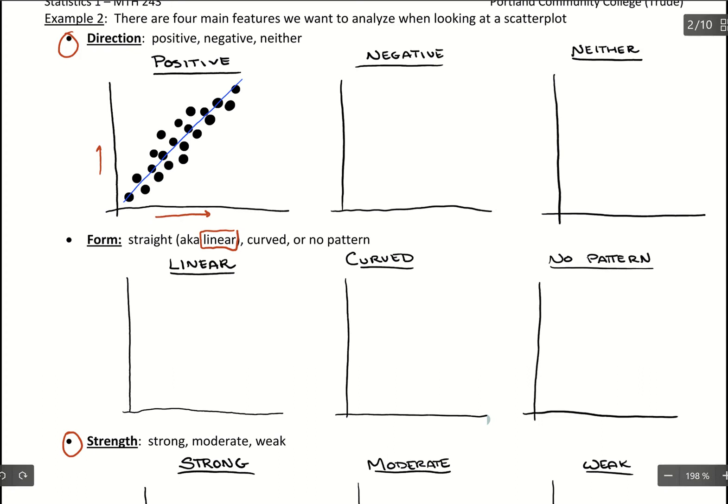And then negative is the same idea, but it's just with a negative slope. So we'd start it up high here and then we'd have something with a decreasing trend.